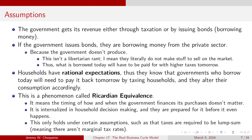The government gets its revenue either through taxation or by issuing bonds. If the government issues bonds, they're borrowing money from the private sector. Because the government doesn't produce, whatever they borrow out of the private sector means fewer resources are available for the private sector. Households have rational expectations, so they know governments who borrow today are going to have to pay it back tomorrow by taxing households — they'll alter their consumption accordingly. That's Ricardian equivalence.